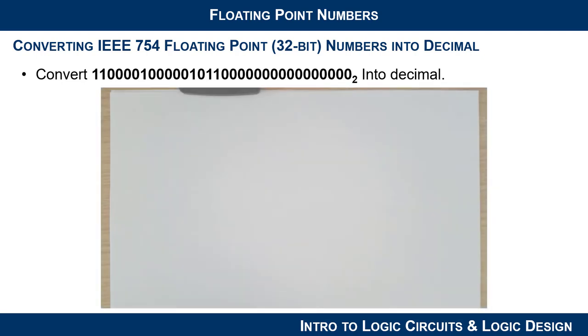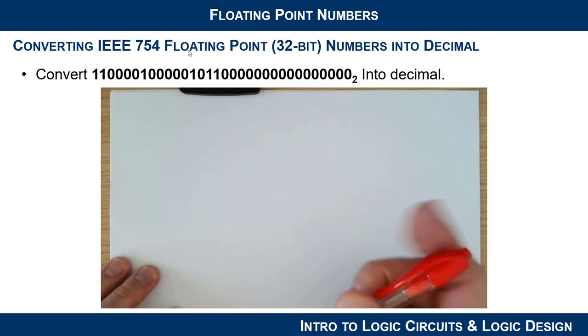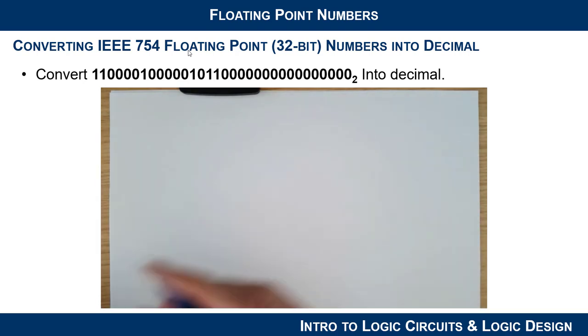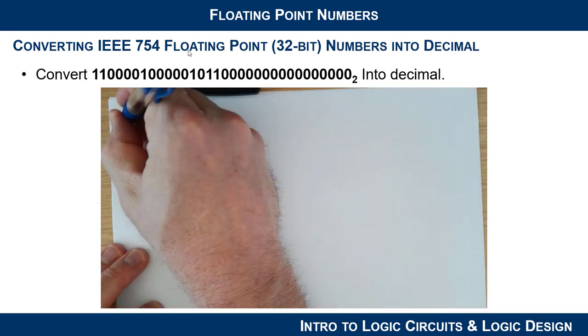So let's do this example. We have this big string of ones and zeros. It's 32 bits, and somebody tells us that it's encoded in IEEE 754 floating point. Let's go ahead and figure out what this is in decimal. So what I'm going to first start with is I am going to reassemble the mantissa.